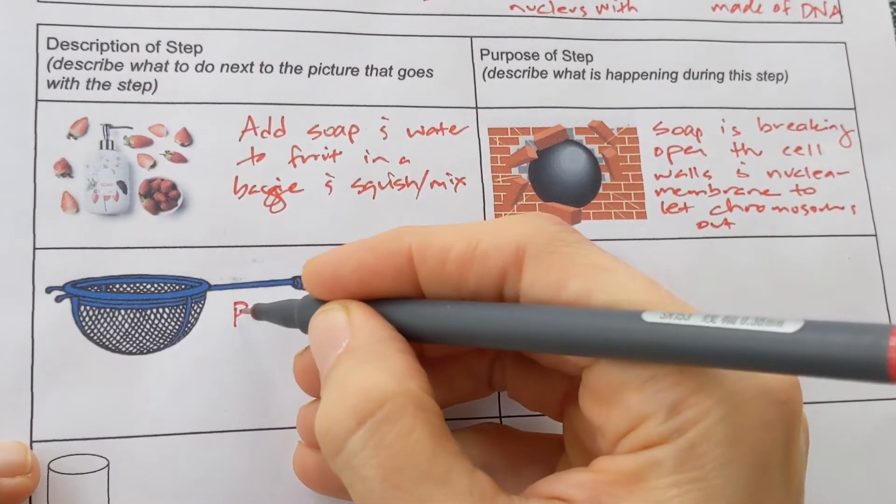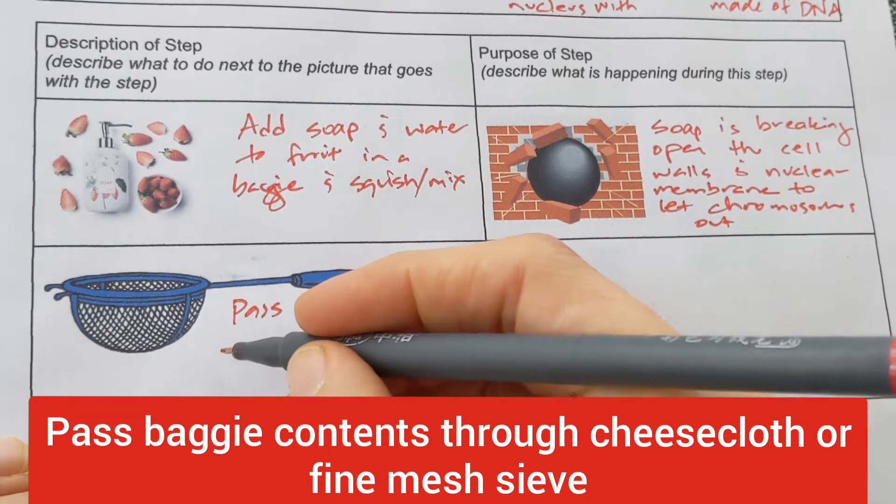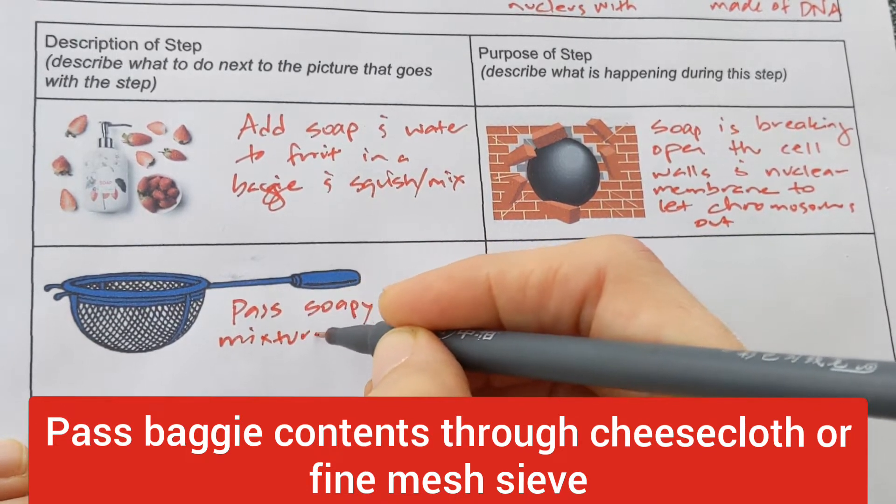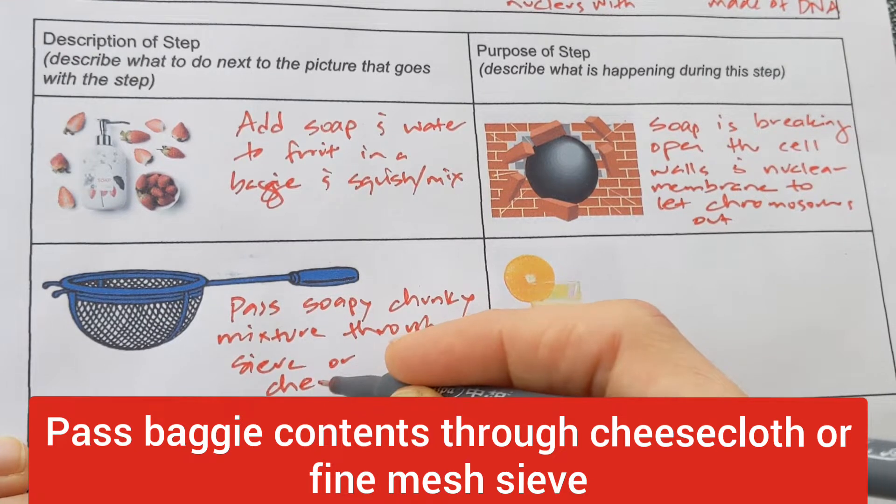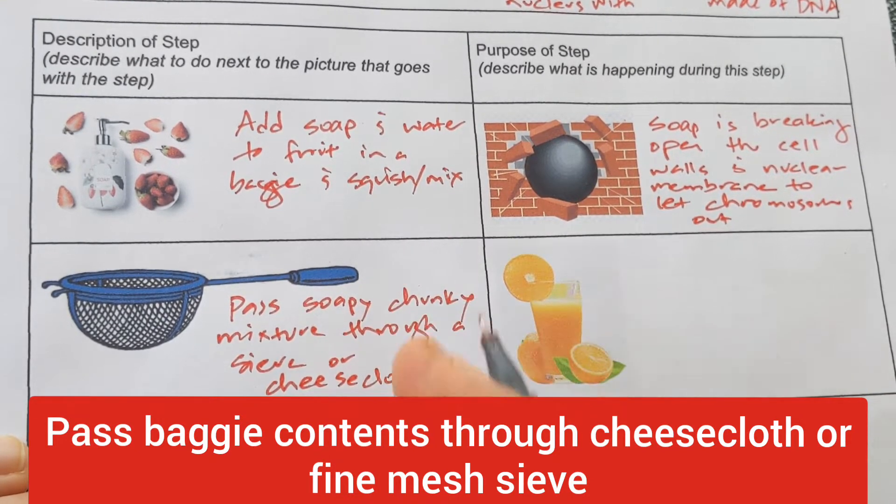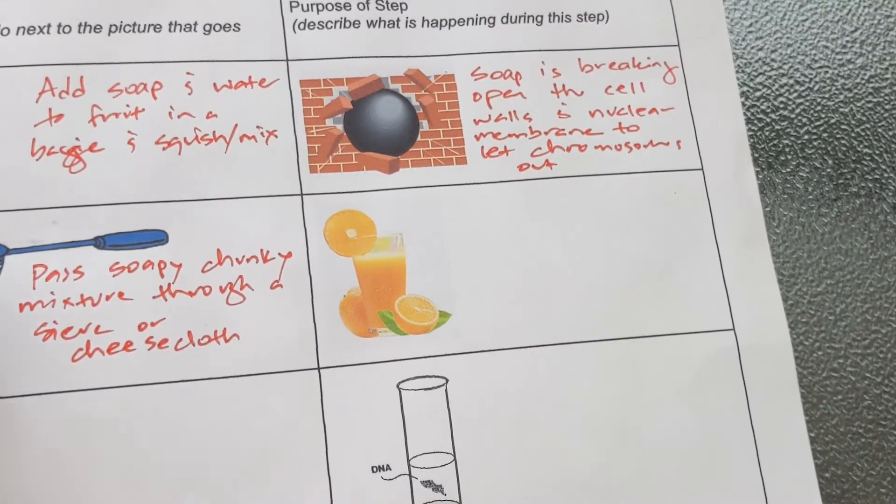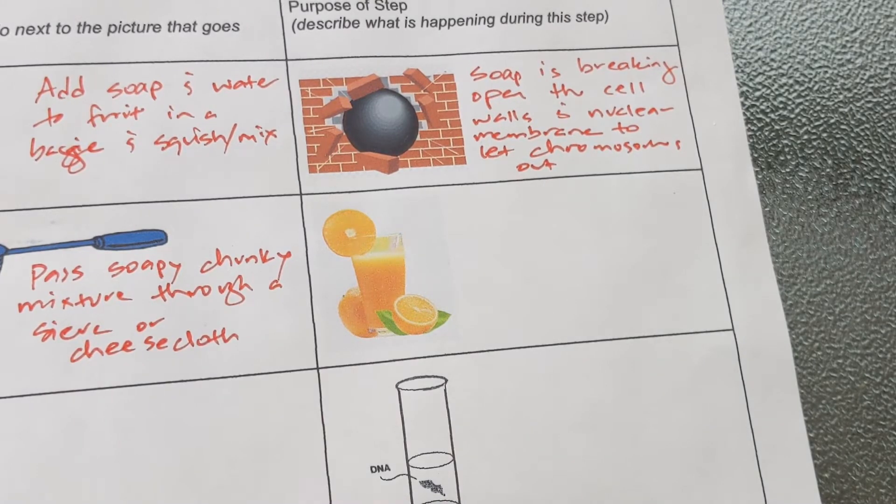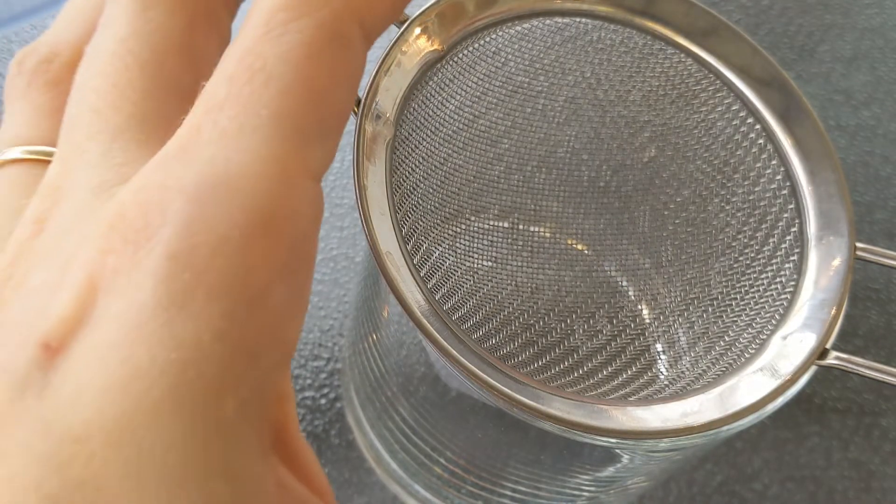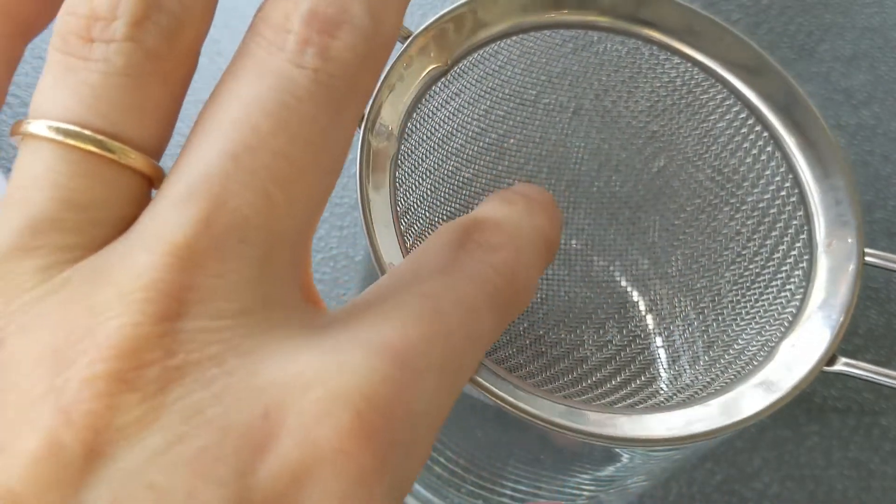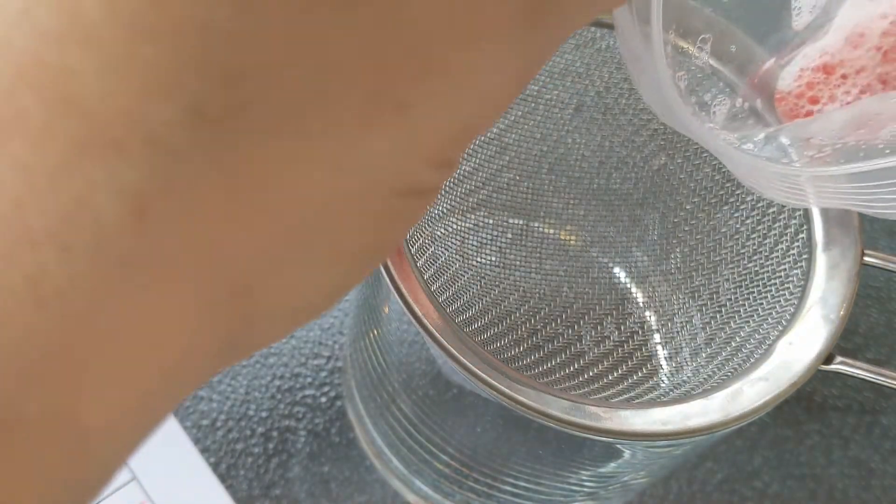The next step is to pass the soapy, chunky mixture through a sieve or cheesecloth. Cheesecloth is really nice if you happen to have it around. But since it's not like 1805, I don't really keep it at my house because I don't make cheese. And a sieve will work just fine. But if you're in the classroom, you're probably able to use cheesecloth. This can be a little bit messy. You're probably going to get a little bit on your fingers. If you're using cheesecloth, it's good to let it dip down in your cup like this, put it in, let it dip down, and then use a rubber band to secure it to the glass or the beaker. You're probably using a beaker if you're in a science classroom.